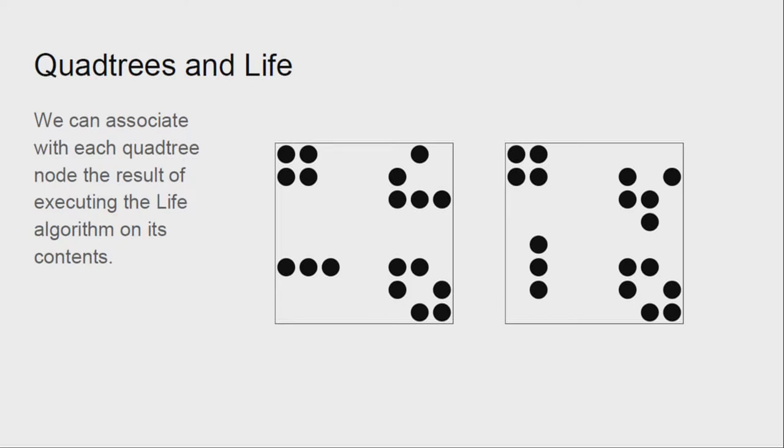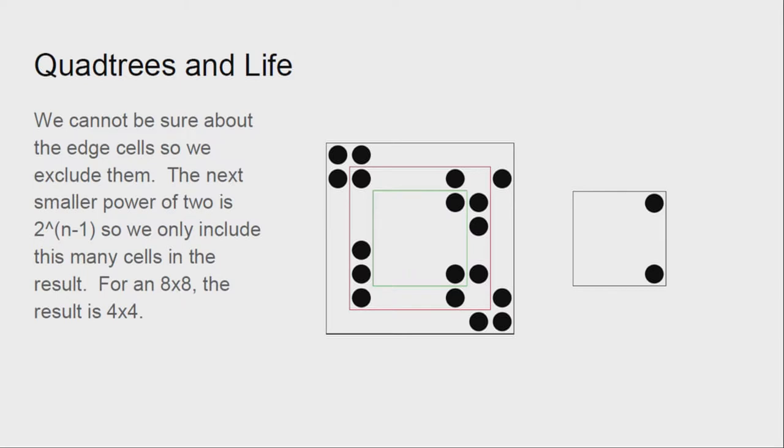The next thing we want to do is add life into the mix. So we calculate the next generation for a particular subnode and we remember it for that node. Unfortunately, when we're calculating the next generation for this 8x8 square, we can't be certain what the neighbors are because we're only focused on this node. So we have to throw away the border, which leaves us with 6x6. But 6x6, we can't represent because our quadtrees only handle powers of 2. So we throw away more. And we end up with a 4x4 result for this 8x8 subnode.